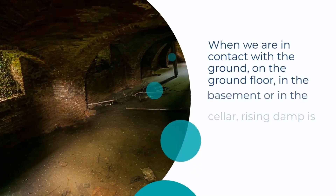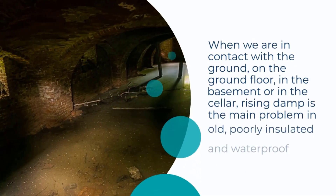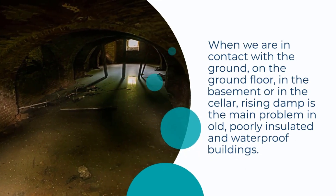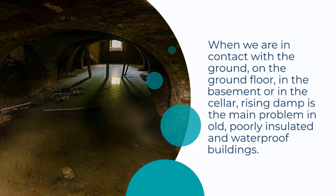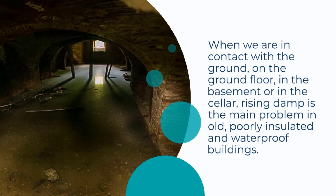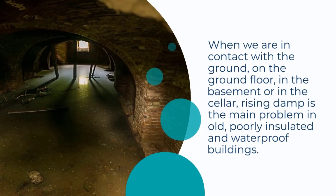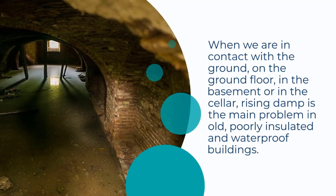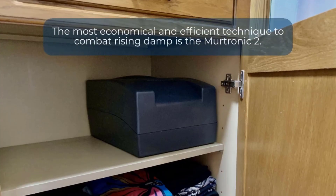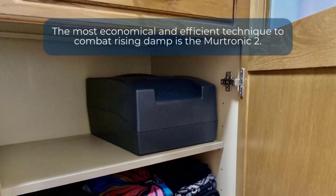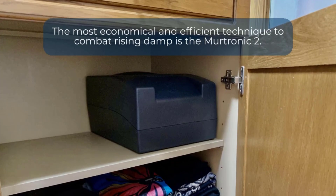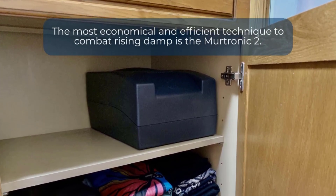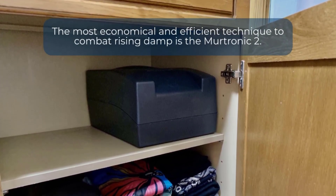When we are in contact with the ground — on the ground floor, in the basement, or in the cellar — rising damp is the main problem in old, poorly insulated, and waterproof buildings. The most economical and efficient technique to combat rising damp is the Myrtronic II.